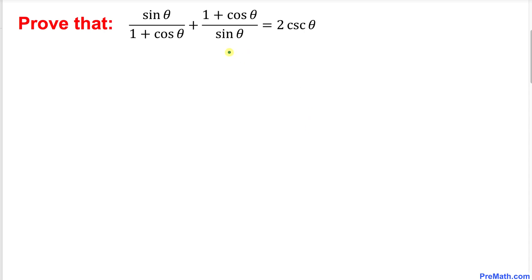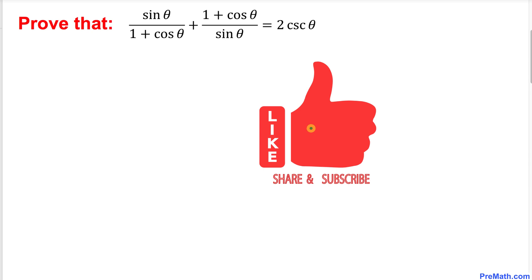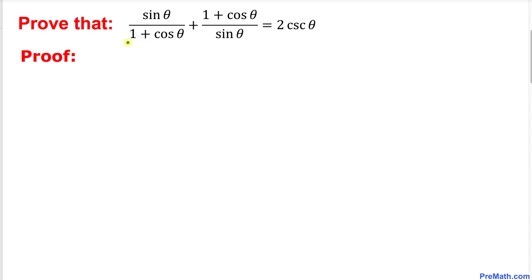Welcome to pre-math. In this video tutorial we are going to prove this given identity: sine of theta divided by 1 plus cosine theta, plus 1 plus cosine theta divided by sine theta, is equal to 2 times cosecant theta. Please don't forget to give a thumbs up and subscribe. So let's go ahead and get started with the proof.